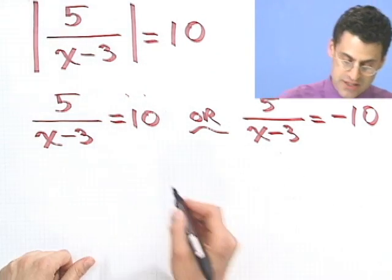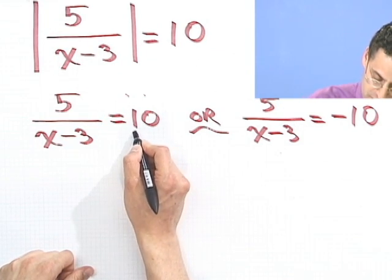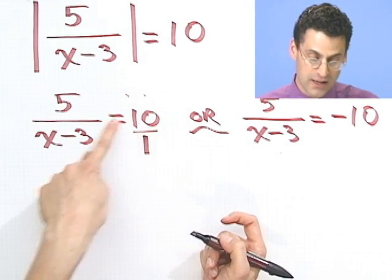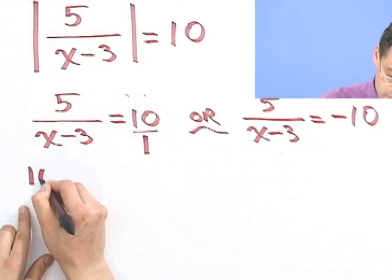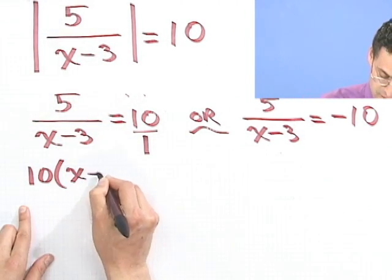is cross-multiply. If you realize that this is actually 10 over 1, I could cross-multiply. And here I would see that 10 times x minus 3, I take this product here.